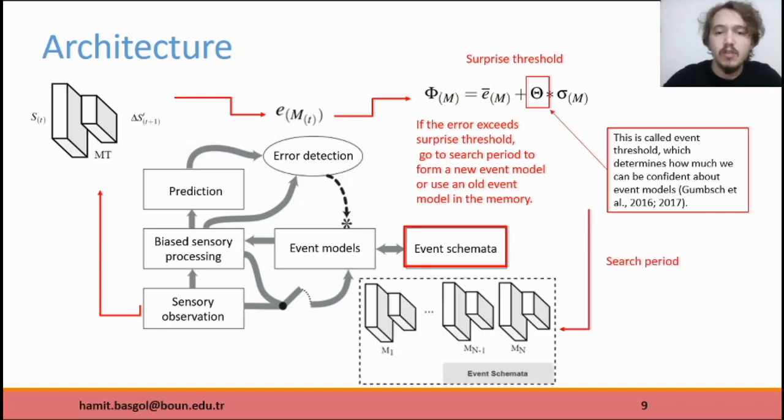In the search period, the surprise sensory input is tried to be assimilated by training with event models that the system already has. If it cannot be assimilated, then a new event model is formed to accommodate the new experience. By this method, we can segment a nonlinear and complex sequence and assign these segments into different multilayer processes.